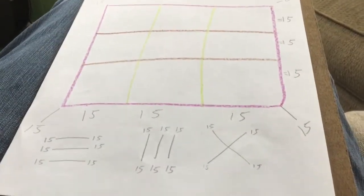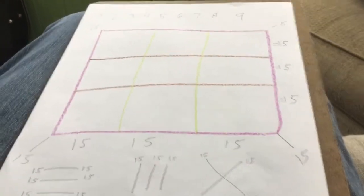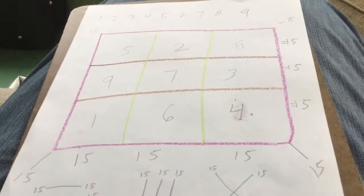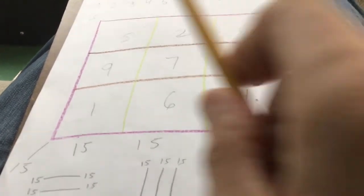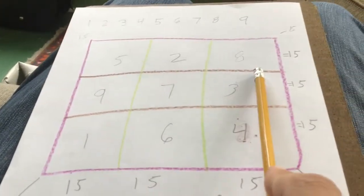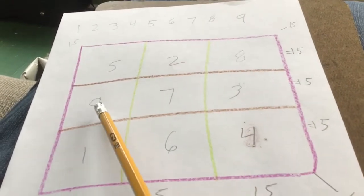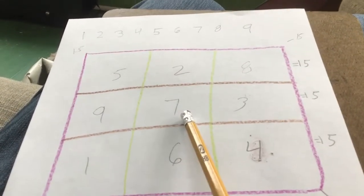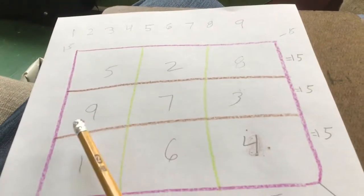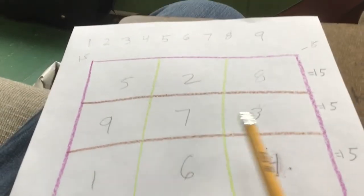I'm going to show you how to do this wrong in just a second. Okay, this is wrong. It's not right because it's wrong. Look at this: 5 and 2 is 7, 8. Hey, that's 15. I got that row right. 9 and 7 is 16, plus 3 is 19. Dang, that's too big. That's not right. So the whole thing has to be right, so I got to do it over.